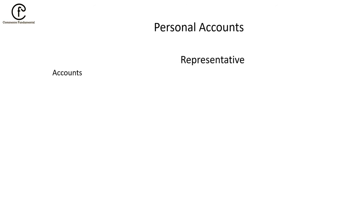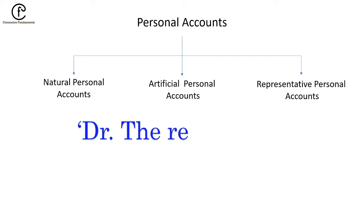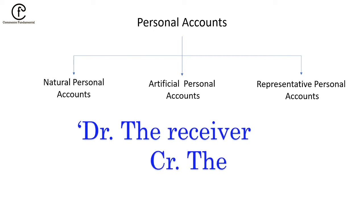Now let's talk about the golden principle of personal account — our first golden principle: Debit the receiver, Credit the giver.